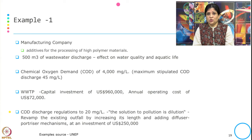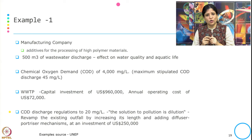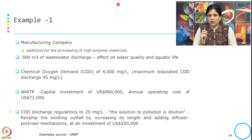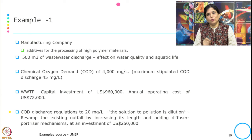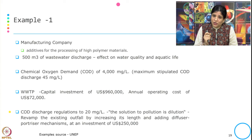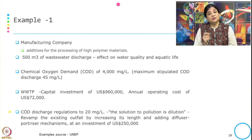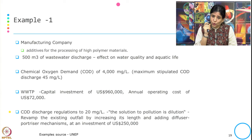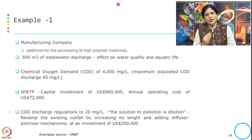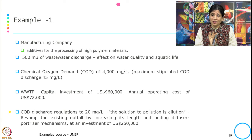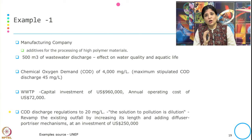In any wastewater, there are three prominent pollutants: BOD, COD, and TSS. The maximum stipulated COD discharge at that point of time was fixed at 45 mg per litre of the wastewater. But whatever wastewater they were discharging, the content of COD in their wastewater was much higher — far higher than whatever was permitted or whatever the maximum stipulated discharge that should happen.